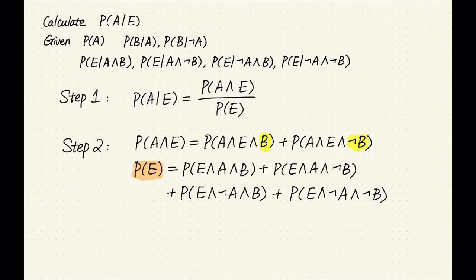As another example, we can take the probability of E and write it as a sum of joint probabilities where each term has all of the variables. In this case we have two missing variables, A and B. Because they're both Boolean, we have four combinations of values for A and B, giving us four terms: A true and B true, A true and B false, A false and B true, and A false and B false. At this step, we've turned the problem of calculating a joint probability over some variables into calculating several joint probabilities, each containing all of the variables.